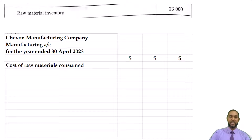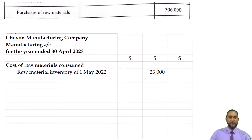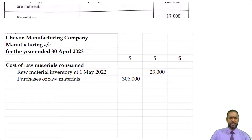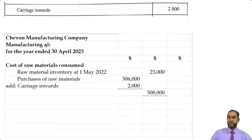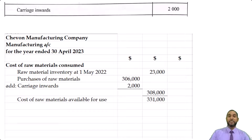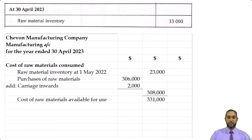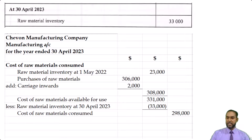We're going to start with the opening inventory, which is $23,000. We have to add any purchases, which we're seeing as $306,000. Do we have any carriage in or returns out? There's carriage in of $2,000, and no returns out. $306,000 plus $2,000 gives us $308,000. Adding $308,000 to $23,000 gives us $331,000 — that's the cost of raw materials available for use. From that, we subtract the closing inventory of raw materials, which is $33,000, giving us $298,000 as the cost of raw materials consumed.